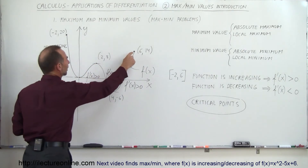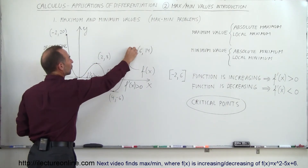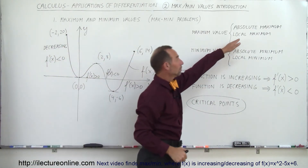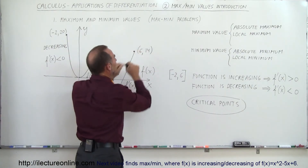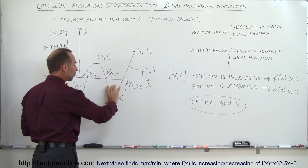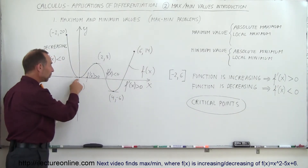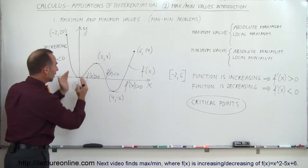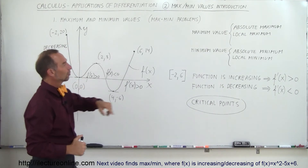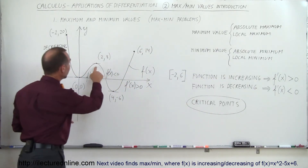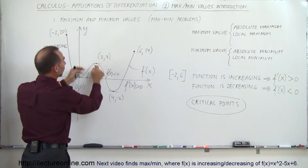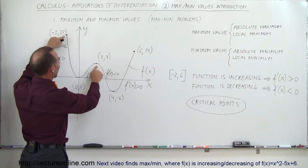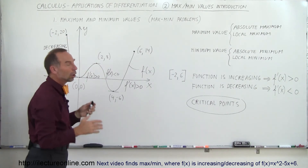What about the other points? One is also a maximum, at least in its local area — we call it a local maximum, meaning in that small region of the graph it is the highest point. The point at y equals negative 6 is the absolute minimum. Another point dips to a low but is not the lowest overall — in its vicinity it is the lowest, so we call it a local minimum. Similarly, another point is the highest in its particular region — that is a local maximum, while the overall highest remains the absolute maximum.